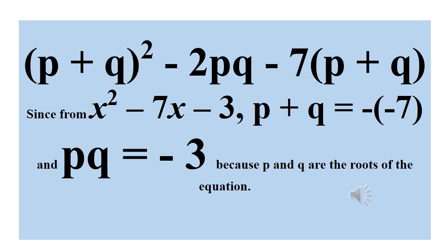Since p and q are roots of x squared minus 7x minus 3: when you add the roots, the sum p plus q equals negative of negative seven, which is positive 7. And the product of the roots p times q equals the constant term, which is minus 3. So p plus q equals 7 and pq equals minus 3.